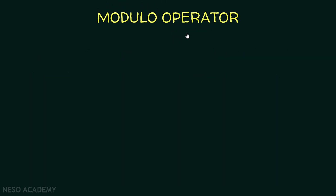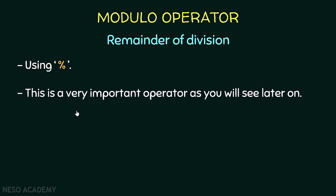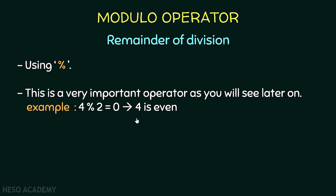Finally, let's talk about the modulo operator. It is used to get the remainder of the division, and it uses the percent sign. You might ask why we need the remainder of the division in programming — as you will see later, this is a very important operator. For example, 4 modulo 2 is equal to 0, so the remainder of dividing 4 by 2 is 0, which means 4 is an even number. Another example: 5 modulo 2 is equal to 1, so the remainder is 1, which means 5 is odd. So we can use the modulo operator to find whether a number is even or odd.